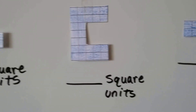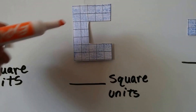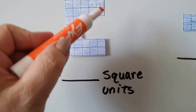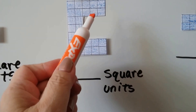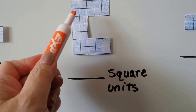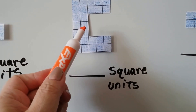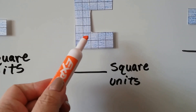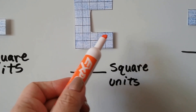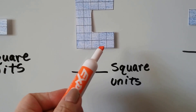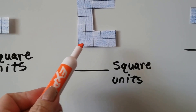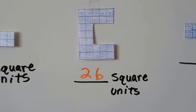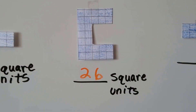How about this one? How many squares do we see? 1, 2, 3, 4, 5, 6, 7, 8, 9, 10, 11, 12, 13, 14, 15, 16, 17, 18, 19, 20, 21, 22, 23, 24, 25, 26. That's 26 square units — this shape is made out of 26 squares.